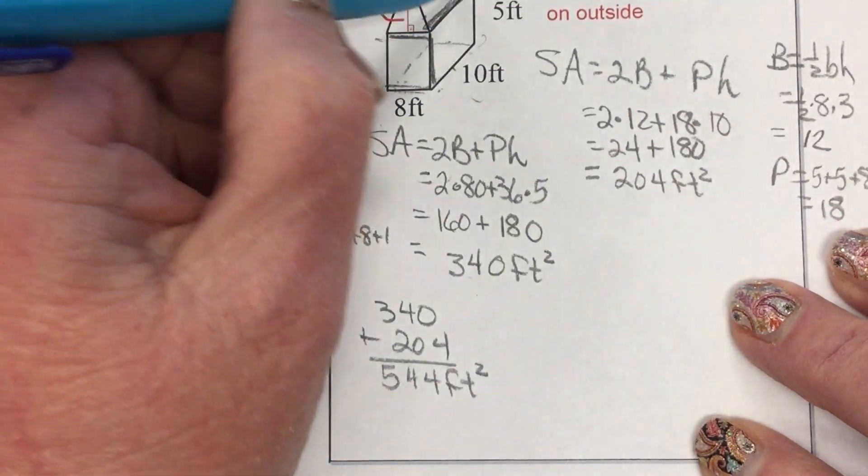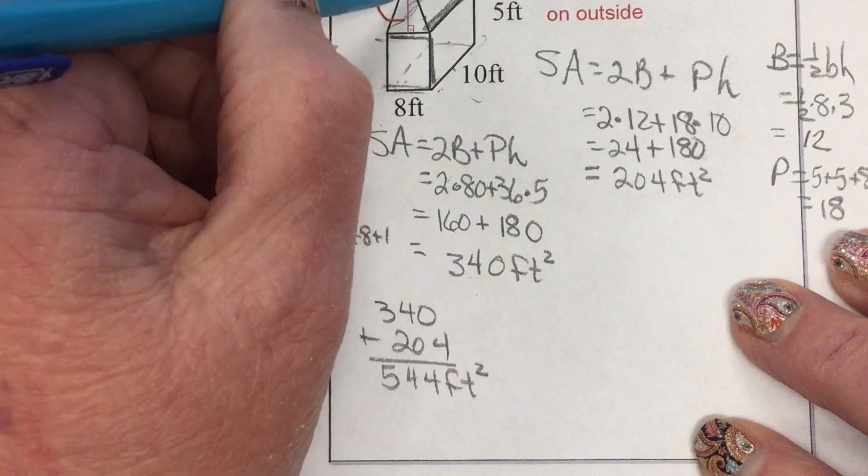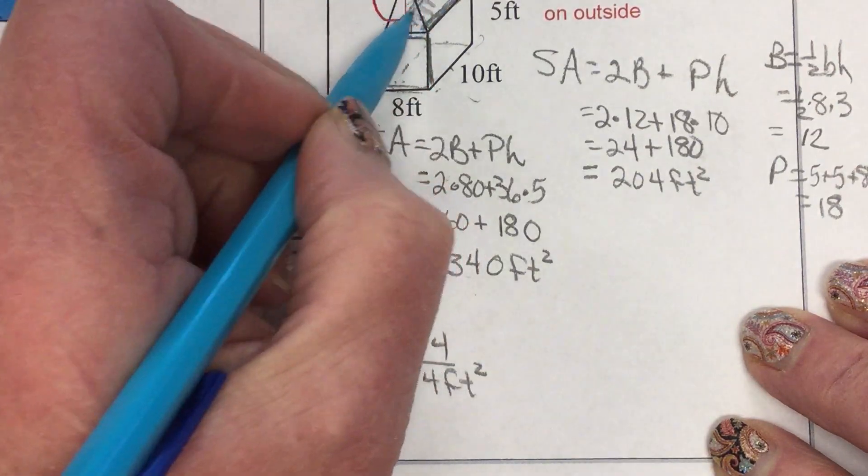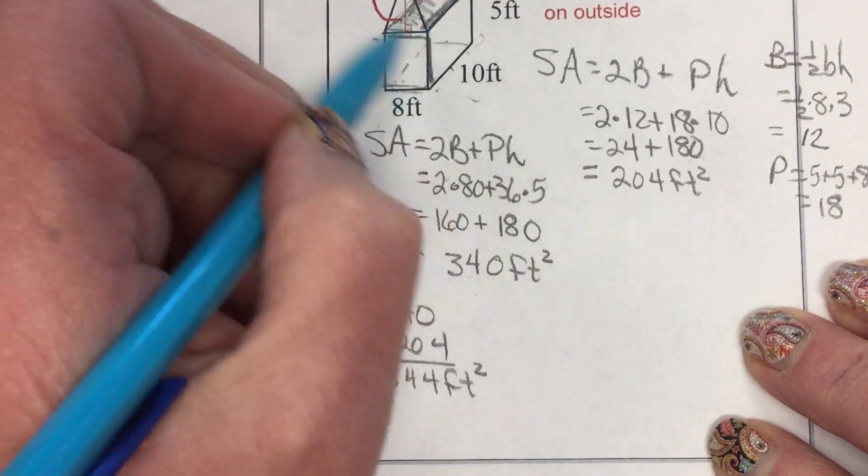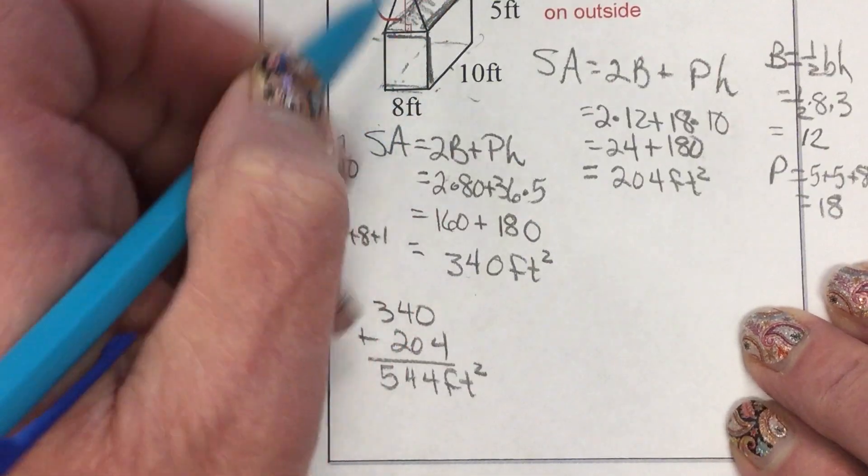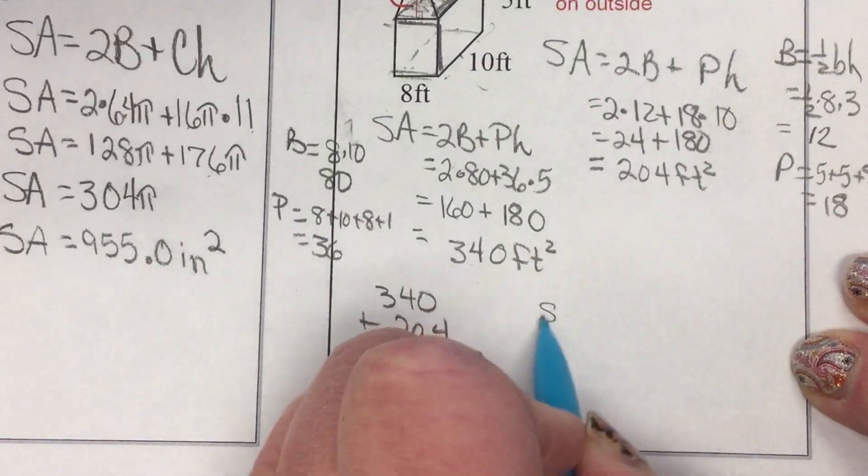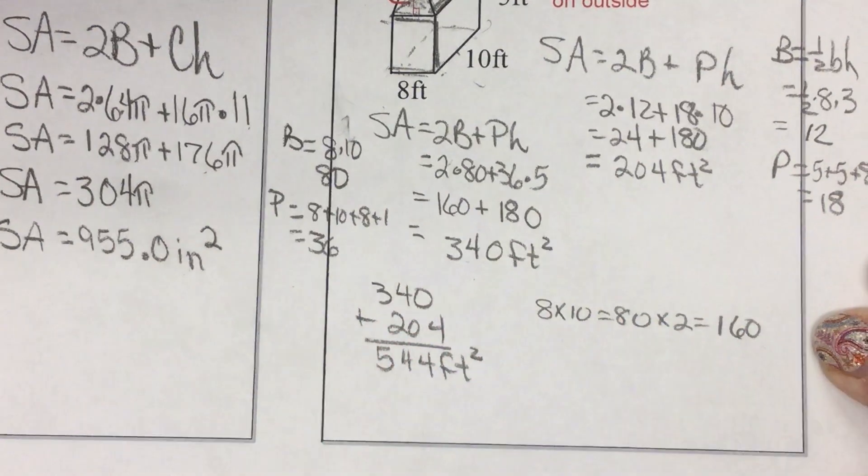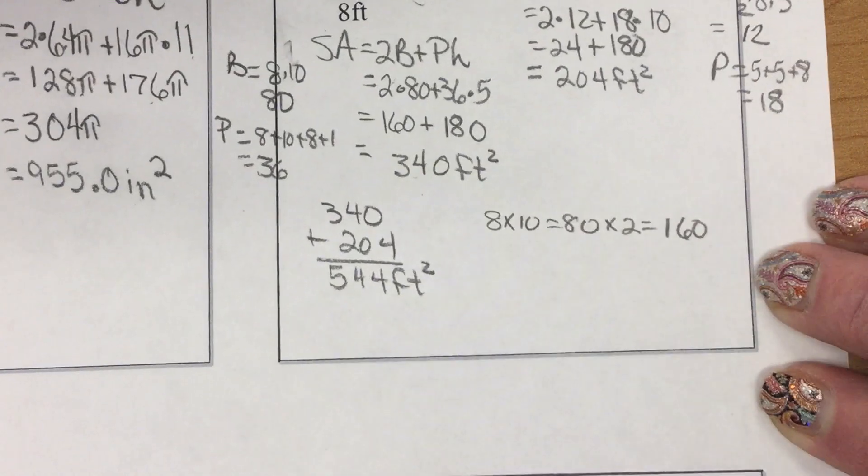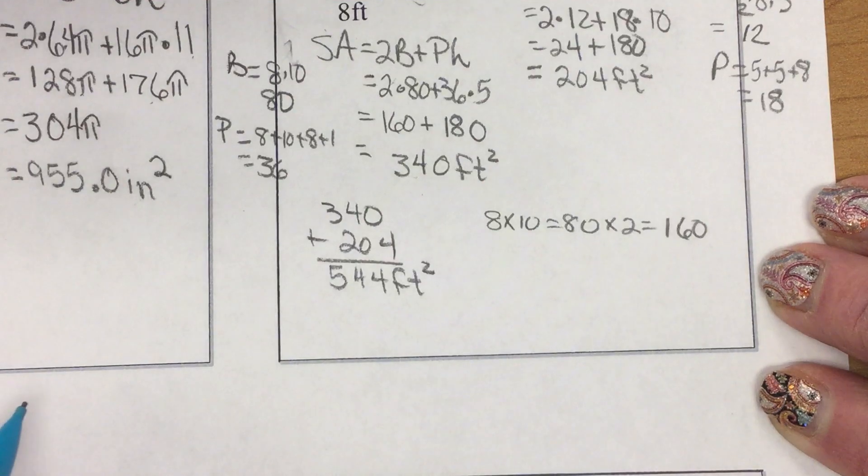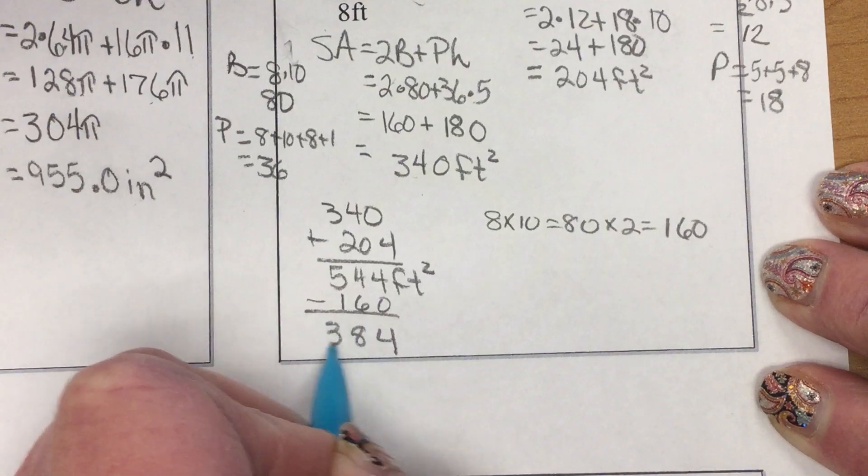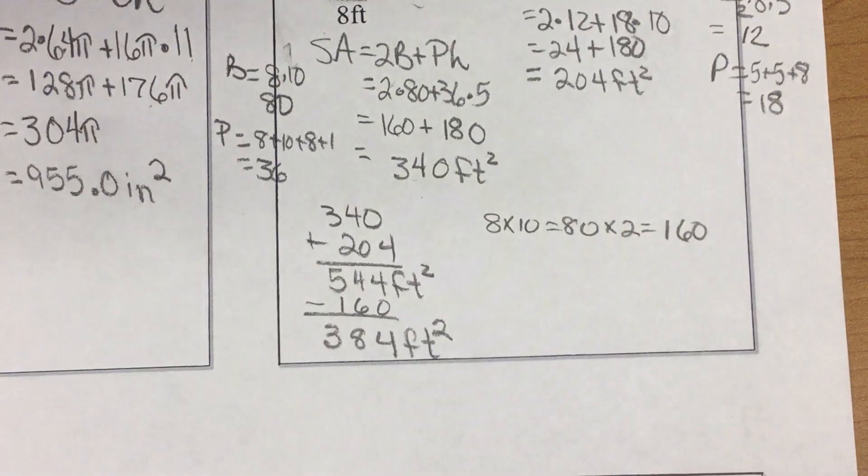However, we have this base plan right here that doesn't show. So, this 8 by 10 rectangle is covered up in both the top and the bottom. So, 8 by 10 is 80, and I have 2 of those. So, I've got 160 square feet that's not going to get on the surface. It's covered up. So, if I subtract that 160 off, 384 square feet is the actual surface area.